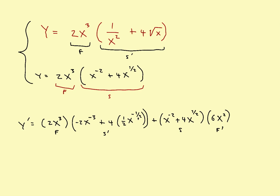That would be the second times the derivative of the first. Now if I want to come in and clean things up — 4 divided by 2, and so on — you can rewrite it. But that basically is the derivative right there: first times the derivative of the second, plus second times the derivative of the first.